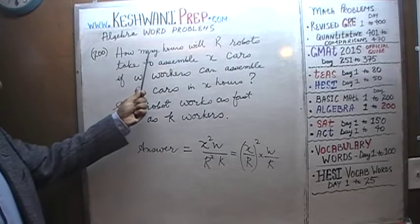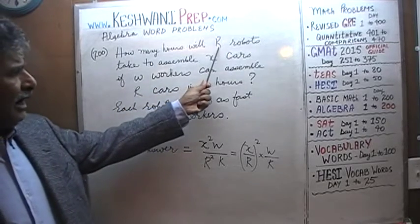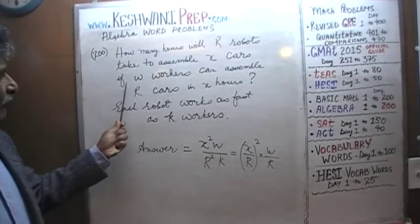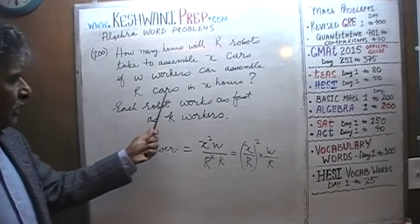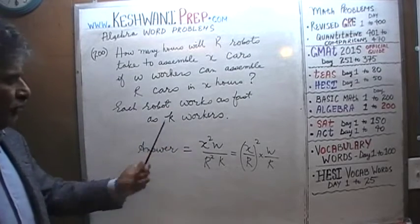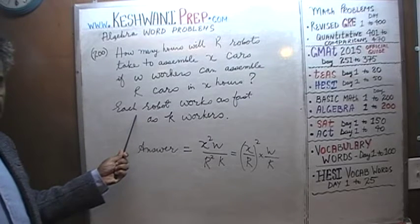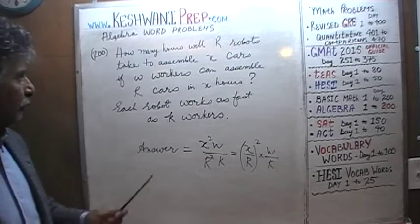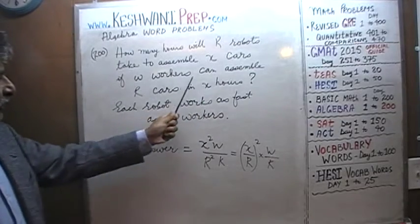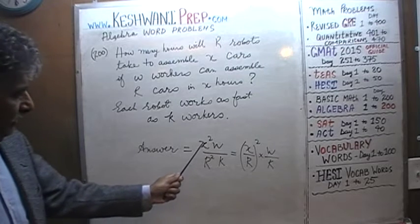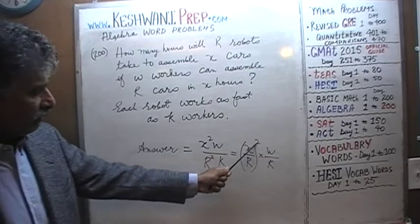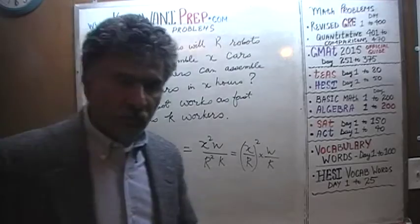It says: how many hours will R robots take to assemble X cars, if W workers can assemble R cars in X hours? And here's the answer. The answer is X squared times W over R squared times K — or if you like, (X over R) whole squared times K. Pause the video and solve the problem yourself.